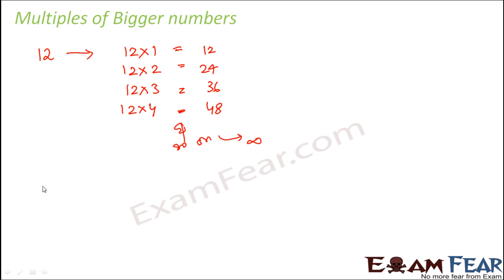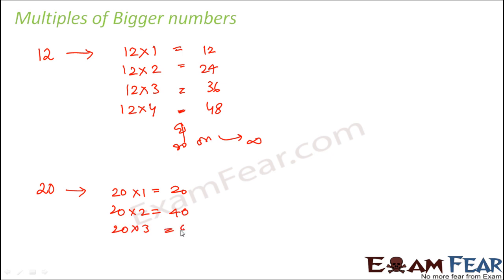Even for a bigger number like 20: 20×1=20, 20×2=40, 20×3=60 and so on. In this way we can write down multiples of numbers. I hope the relationship between factors and multiples is clear now.